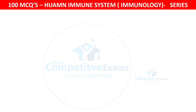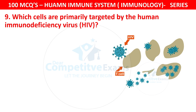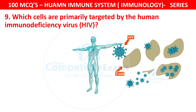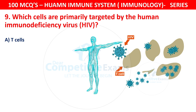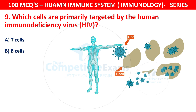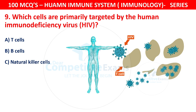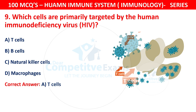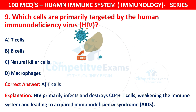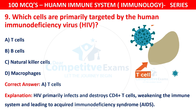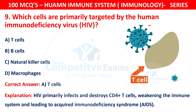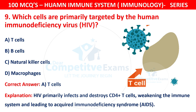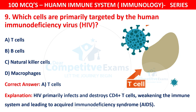Question 9. Which cells are primarily targeted by the human immunodeficiency virus, HIV? Your options are T cells, B cells, natural killer cells, or macrophages. The correct answer is A — T cells. HIV primarily infects and destroys CD4+ T cells, weakening the immune system and leading to acquired immunodeficiency syndrome, AIDS.